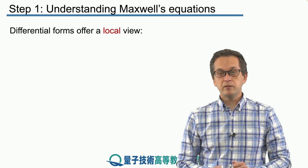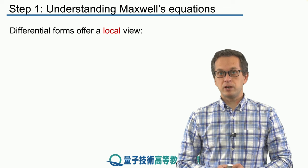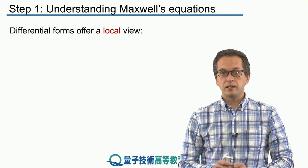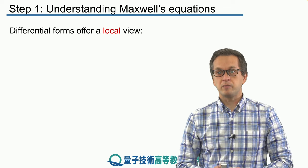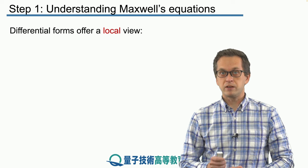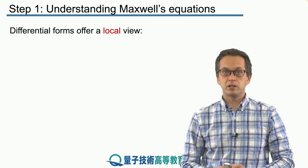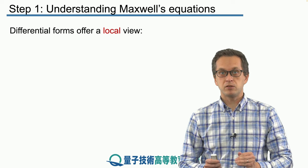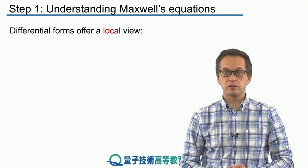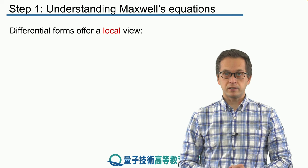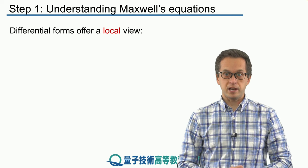The other form of Maxwell's equations is the differential form, and this tells us about a local view. It gives us local information of what the fields must do in order to satisfy classical physics — classical electrodynamics.